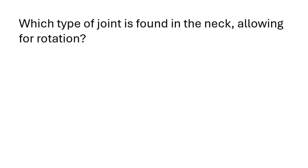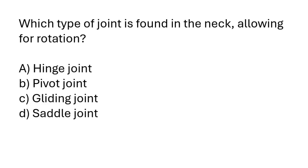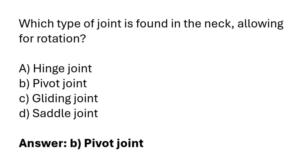Which type of joint is found in the neck allowing for rotation? The correct answer is option B: a pivot joint is found in the neck allowing for rotation.